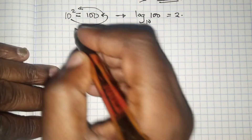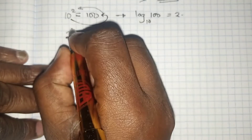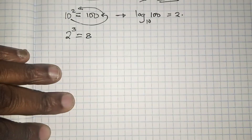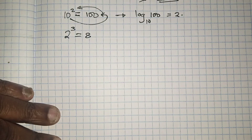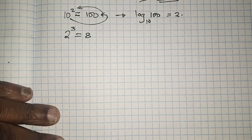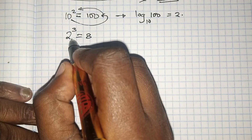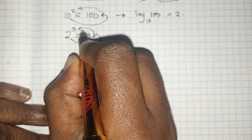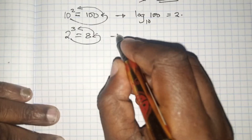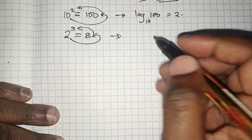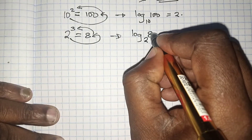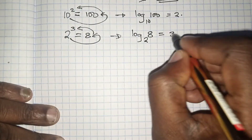It doesn't just work with 10; it works with all numbers. For example, if we know that 2 cubed is equals to 8, we apply the same anti-clockwise movement: log to base 2 of 8 is equals to 3. That's how it is — the logarithmic notation is log to base 2 of 8 is equals to 3.